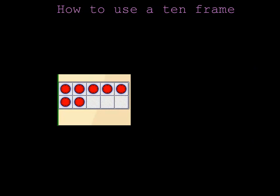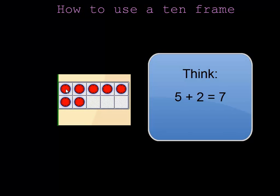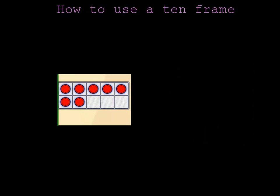This 10 frame has 7 chips in it. One way I can see that is I know that a full row of chips is 5 chips plus 2 more makes 7 because I know that 5 plus 2 is 7.